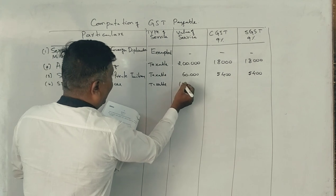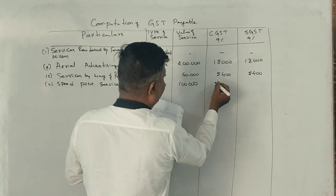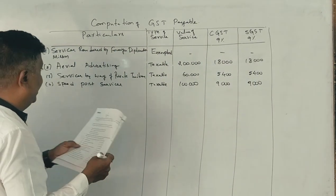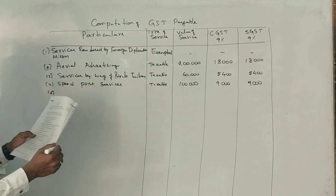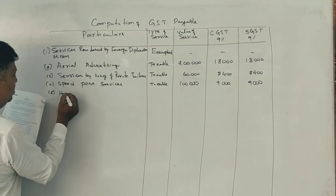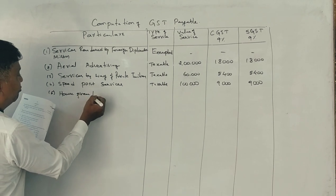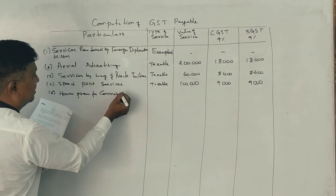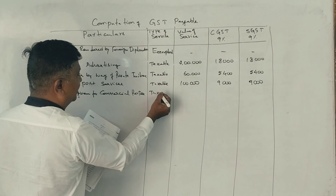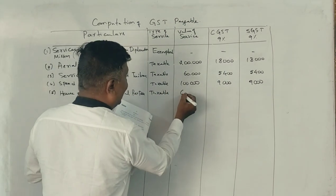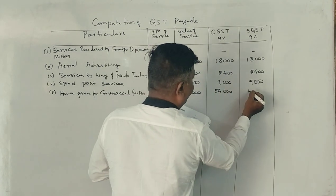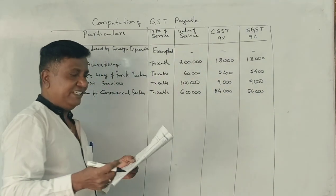Thereby 1 lakh rupees — 9% CGST is 9,000 and 9% SGST is 9,000. Next point: house given on rent for commercial purpose. Commercial purpose is a taxable service. Thereby total 6 lakh rupees — 9% gives 54,000 rupees CGST and 54,000 rupees SGST.